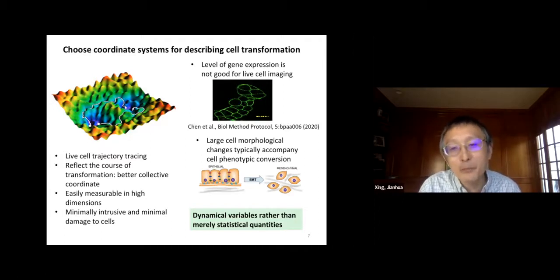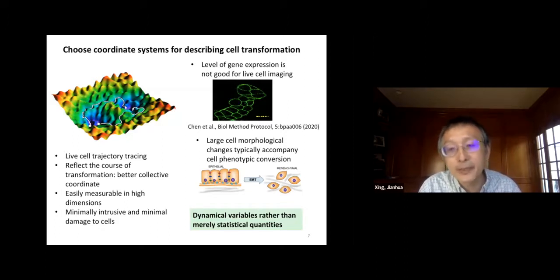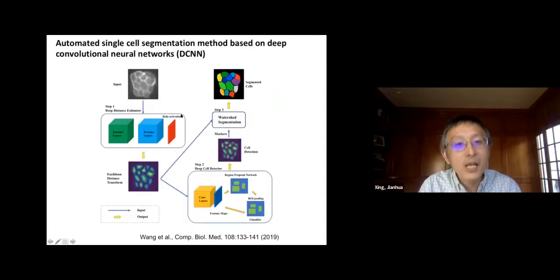From a statistical physics perspective, cell morphological features are collective variables — collective degrees of freedom. This is natural for us, because when we describe a system, we can either trace individual particles or use these collective variables.